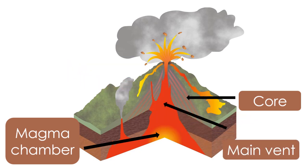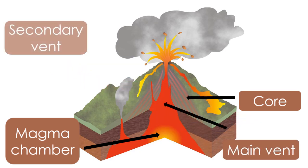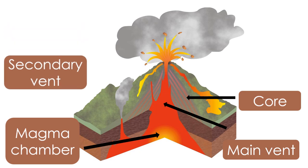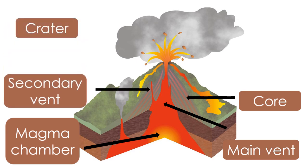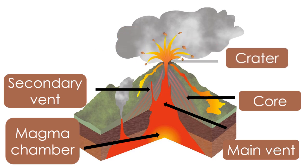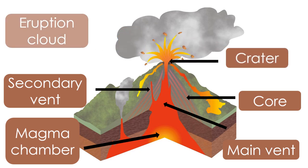If the main vent is blocked, the lava will find a secondary vent to travel through. The lava will come out of a crater at the top of the volcano. And in an eruption cloud, gas, lava and ash are released into the air.